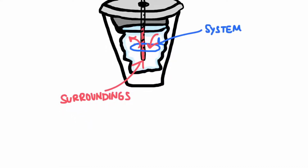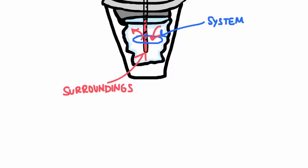When performing a chemical reaction in a calorimeter, we want to calculate the amount of heat transferred. Heat either goes into or out of the system, and what we're dealing with is enthalpy — delta H — which we learned about in the previous video. Delta H equals the change in enthalpy of the system, which is literally equal to Q, the heat of the system. The heat change of the system is opposite to the heat change of the surroundings: if heat goes into the surroundings, the water increases in temperature while the system decreases. So Q_system equals negative Q_surroundings.